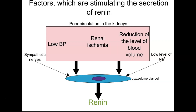Factors that stimulate the secretion of renin include poor circulation in the kidneys — decreased blood pressure, which could be a result of renal artery stenosis or shock. The decrease in blood pressure leads to not enough oxygen to the kidney. It doesn't necessarily have to be ischemia; it could also be a decrease in volume, such as dehydration. Different mechanisms cause renin release, including the kidney itself, the sympathetic nervous system, and a low level of sodium.